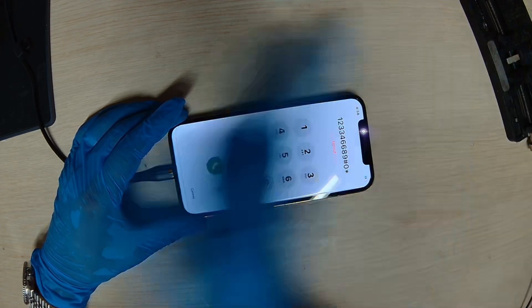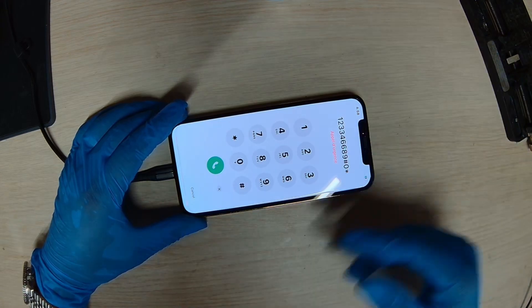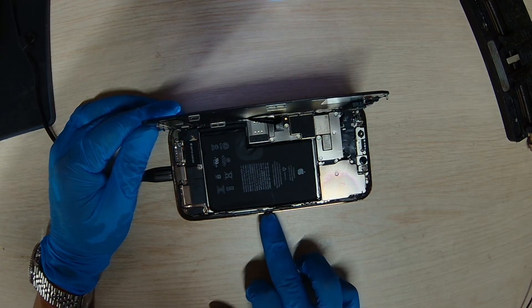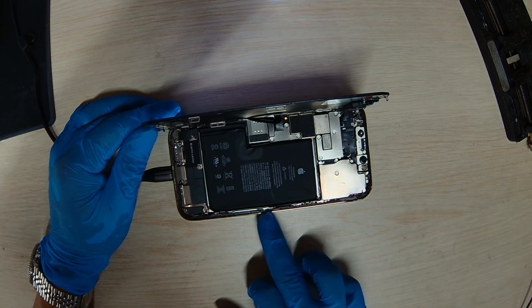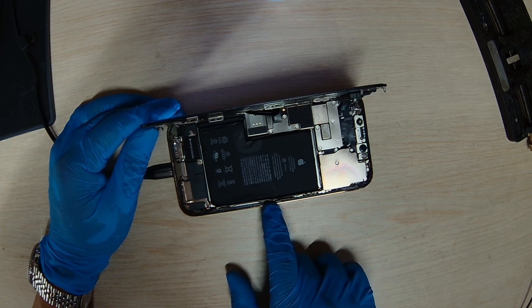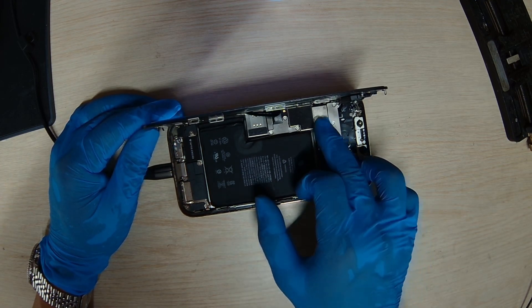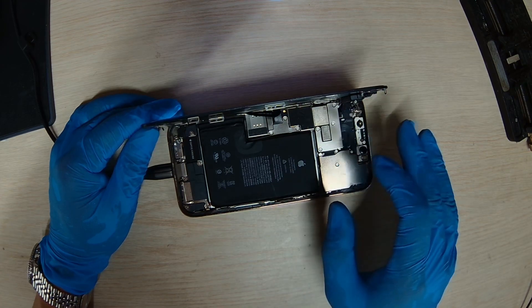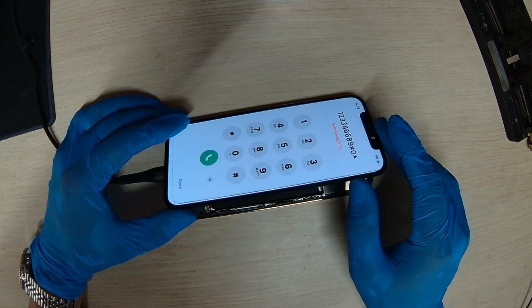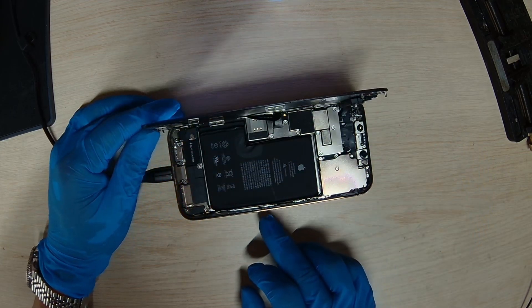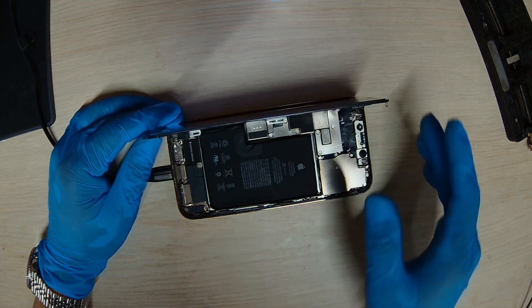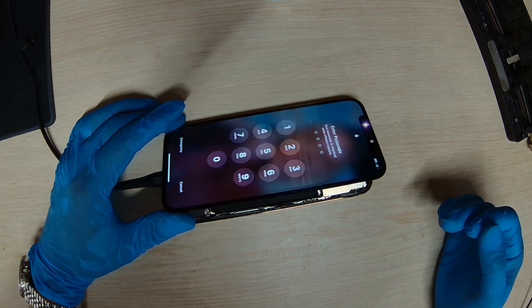So basically this phone was it got water damage and the water damage got into the 4G, I'm sorry the 5G module antenna module. And it shorted out the 5G antenna module and it shorted out the phone as well. So what happened the 5G antenna is hooked up to the board so it shorted out the board too. So we replaced the 5G antenna module. So now the phone works. So that's it.